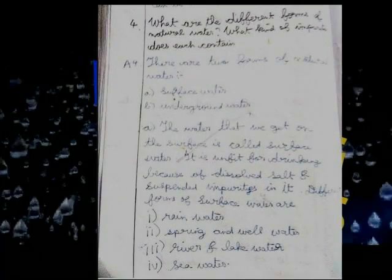Long answer, question 4: What are the different forms of natural water? What kind of impurities does it contain? There are two forms of natural water: surface water and underground water. Surface water: The water that we get on the surface is called surface water. It is unfit for drinking because of dissolved salts and suspended impurities in it.